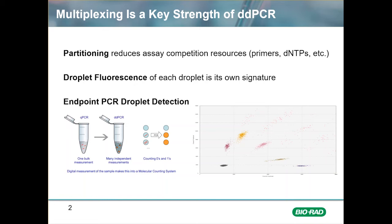Here is a 2D plot with five assay targets testing positive that can be quantified with just two fluorescent channels. Finally, detecting the droplets after the PCR reaction is complete — otherwise referred to as endpoint detection — means that differences in efficiency caused by the multiplex will have no impact on the quantification of the sample.